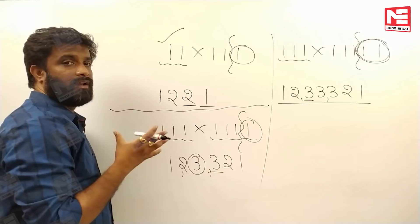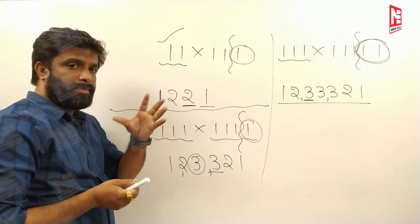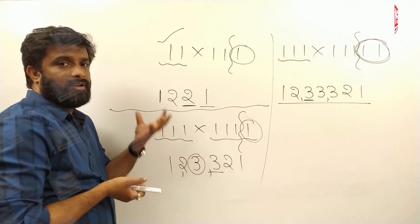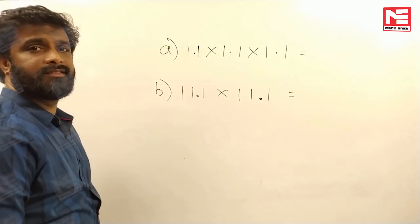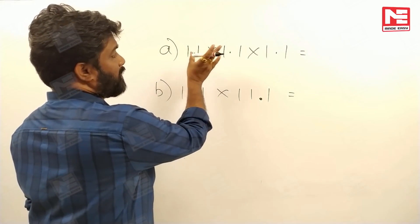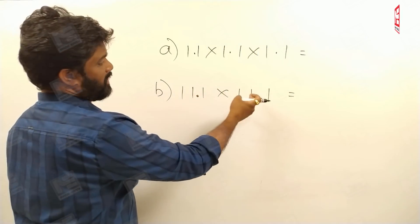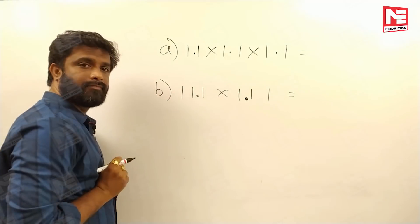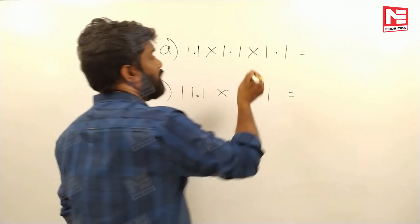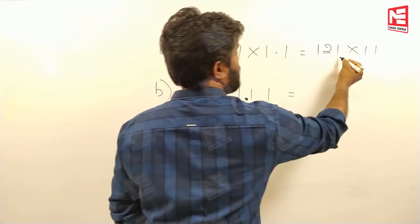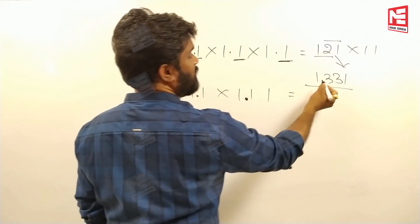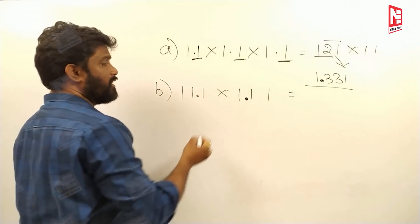Now there is an interesting exam question that blends both the 11-multiplication and all-ones multiplication concepts. For 1.1 into 1.1 into 1.1 — that is 11 into 11 into 11, i.e., 11 cubed. Since 11 into 11 is 121, and 121 into 11 gives 1331, and with three decimal places (one per factor), the answer is 1.331.